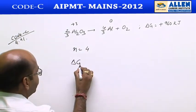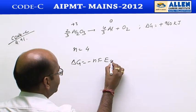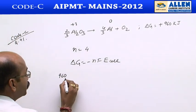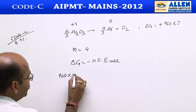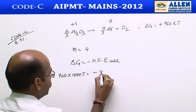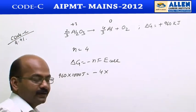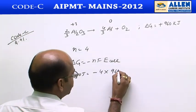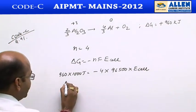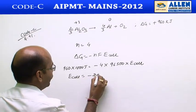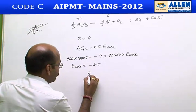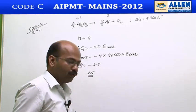As we know, delta G equals minus N F E_cell, where E_cell means potential difference. Delta G is 960 kilojoules, which equals 960,000 joules, equal to minus N (which is 4) times F (Faraday constant, 96500 coulombs) times E_cell. Solving, E_cell equals minus 2.5. The question asks for potential difference, which is 2.5, so the answer is option 1.